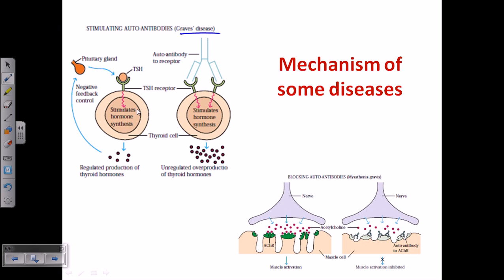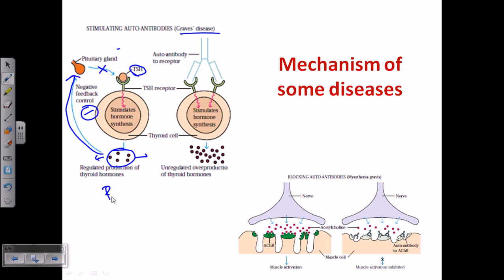Graves' disease is an autoimmune disease caused by self-autoantibodies. Normally, the pituitary gland secretes thyroid stimulating hormone (TSH), which binds to TSH receptors on thyroid cells, stimulating hormone secretion. The thyroid hormones then provide negative feedback to the pituitary to stop producing more TSH, maintaining a balanced concentration of thyroid hormone.